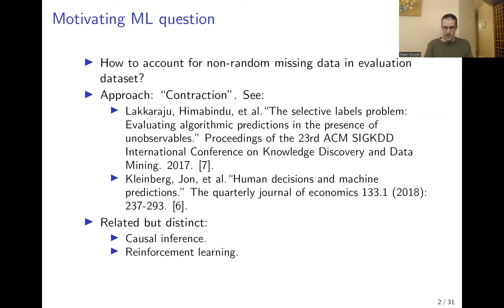Contraction was pioneered by a group of economists and computer scientists working together about four or five years ago, and they published a series of papers on this topic — I've cited two examples. In other circumstances, other approaches to solving this problem of non-random missing data can be appropriate, such as approaches based on causal inference and approaches based on reinforcement learning. I'm not going to discuss these in detail in this talk, but I may do so in a future video.